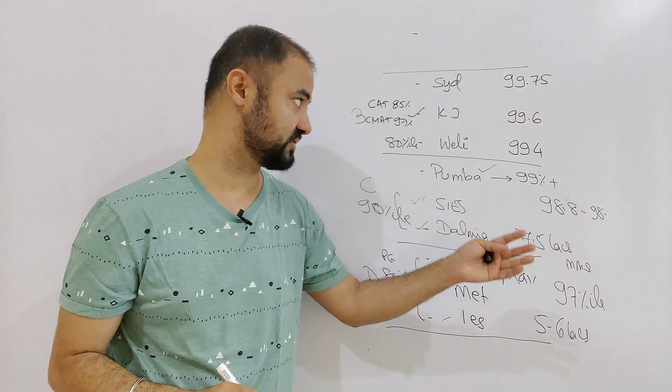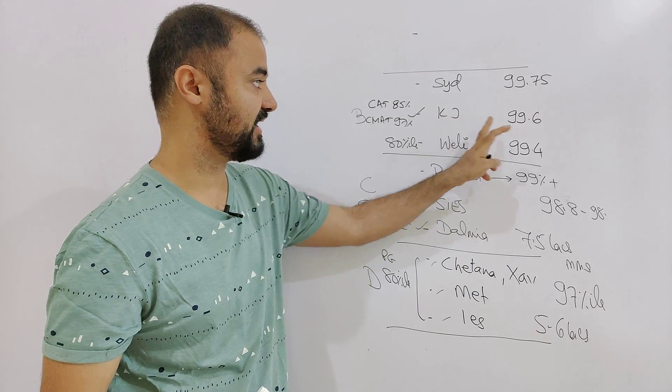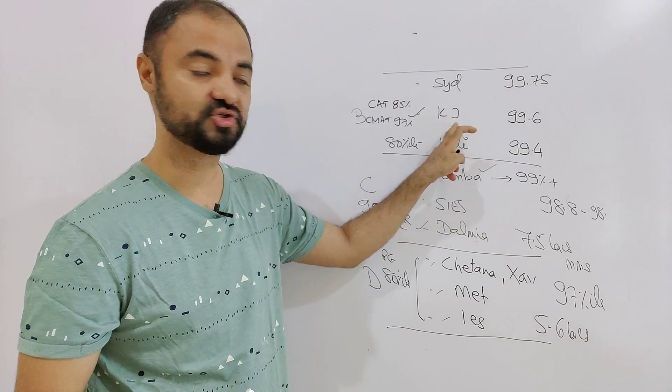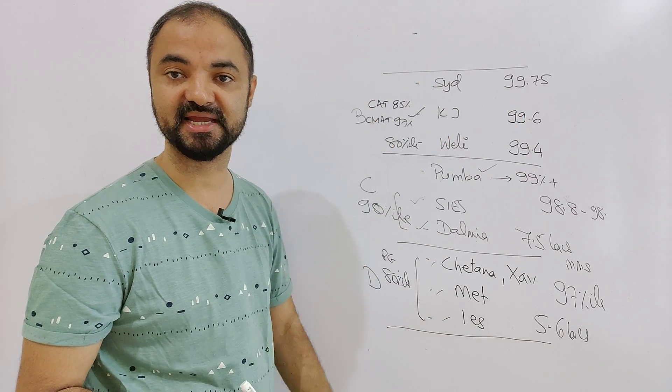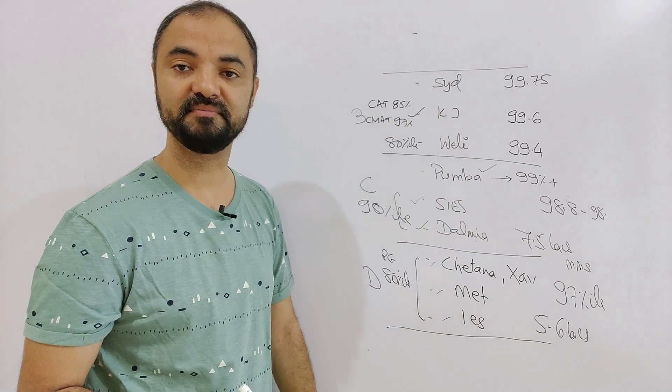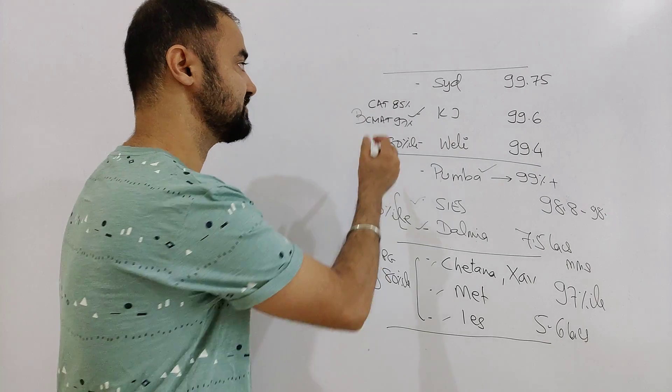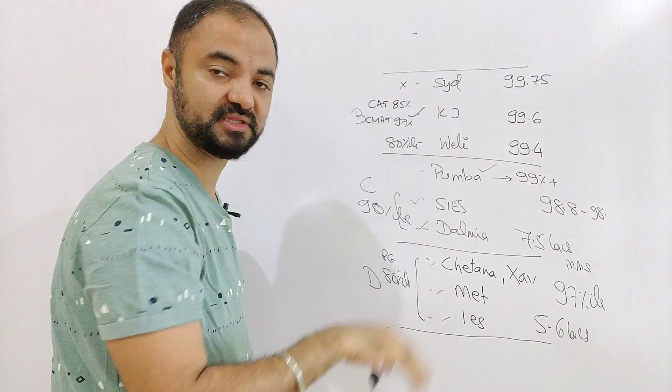Same way, Welingkar cutoff is around 80 percentile for all the courses. They have obviously, they have more seats, more courses. Now look at that, Somaiya CET cutoff 99.6. Somaiya CAT cutoff 85 percentile. So for them, CET 99.6 is same as CAT 85. Then Sydenham 99.75. There is no PGDM. There is PGDM, but that is through the CET round only.